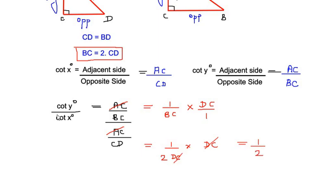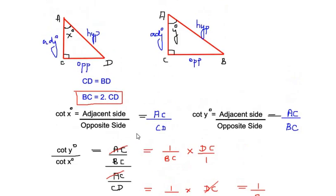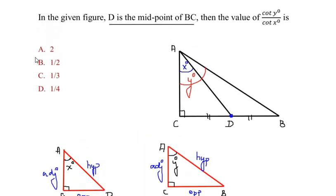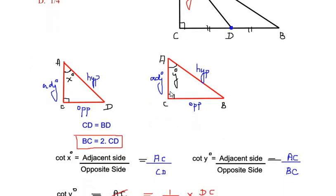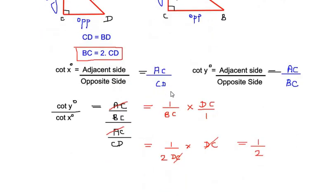So we have cot y degree divided by cot x degree as 1 over 2. So let us check the options. So we have option B as our answer. I hope you have understood all the steps and liked the video. If you are liking my videos, like, share, and subscribe to my channel, and thank you for watching.